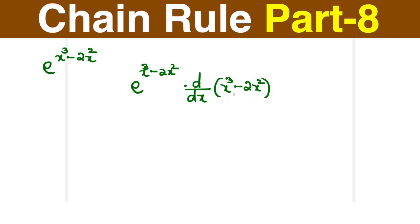This is the differentiation of t part in the chain rule. Let's do the differentiation and multiply to write the answer. So e^(x³ - 2x²) times the differentiation of x³ which is 3x², and differentiation of 2x² is 4x.